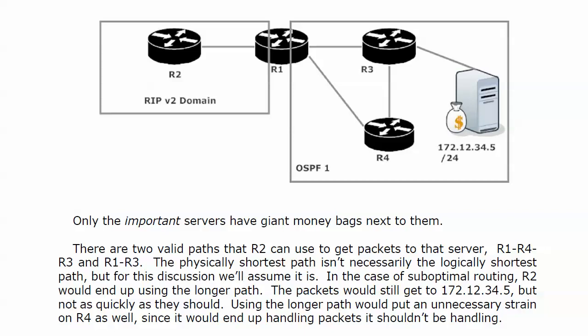In the case of suboptimal routing, router 2 would end up using the longer path. The packets would still get to the server, but not as quickly as they should. And of course, using the longer path would put an unnecessary strain on router 4 as well, because it ends up handling packets it shouldn't be handling. That's kind of the hidden cost of suboptimal routing.